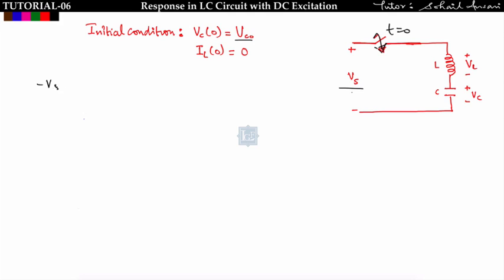by KVL I will get: minus Vs plus VL plus VC equals zero. So I can write VC plus VL equals Vs, and VC plus L times d(IL)/dt.